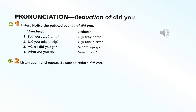Page 89, Pronunciation. Reduction of 'did you.' Listen and notice the reduced sound of 'did you.' One: Did you stay home? Two: Did you take a trip? Three: Where did you go? Four: What did you do?